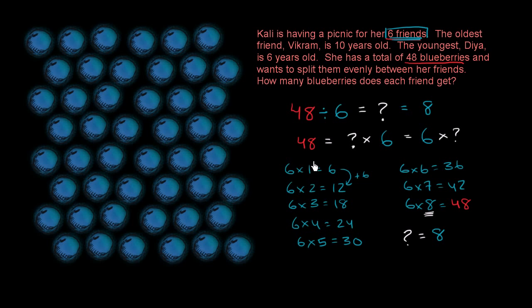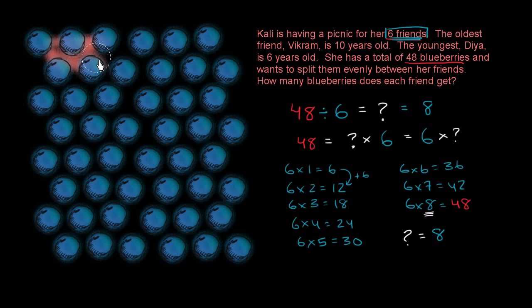Now let's verify that. We have 48 blueberries right over here. Let's divide them into six groups where each group is going to have eight blueberries. So let's see: one, two, three, four, five, six, seven, eight. So that's a group of eight blueberries.